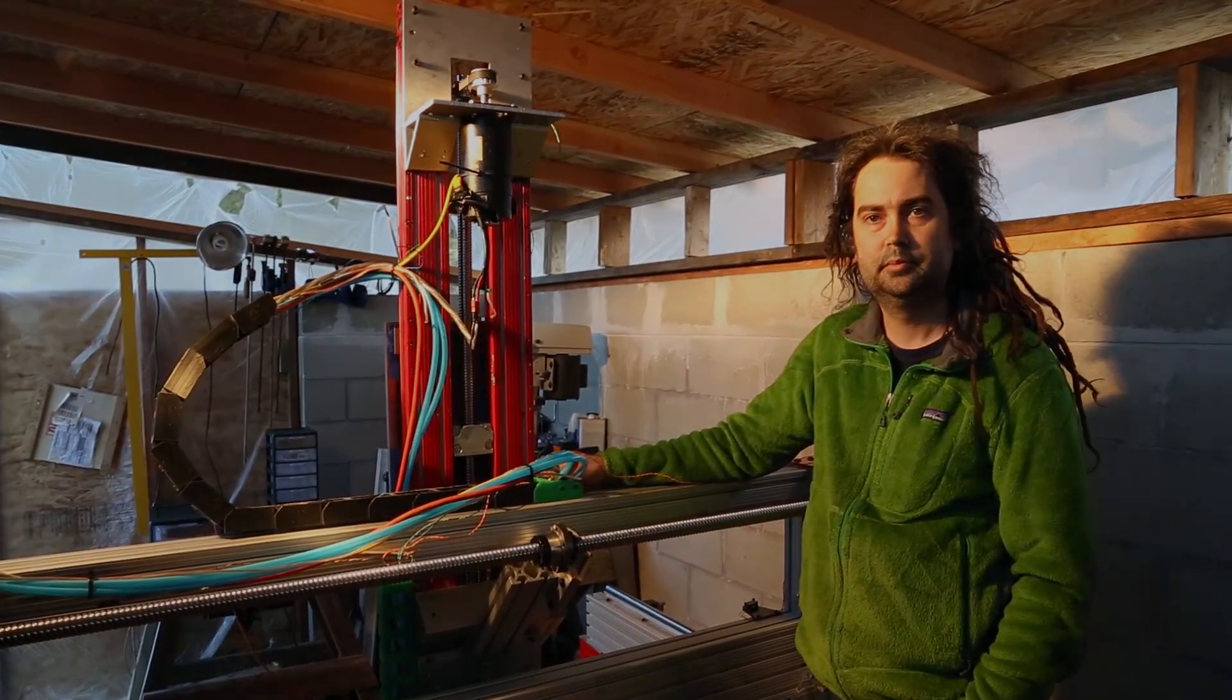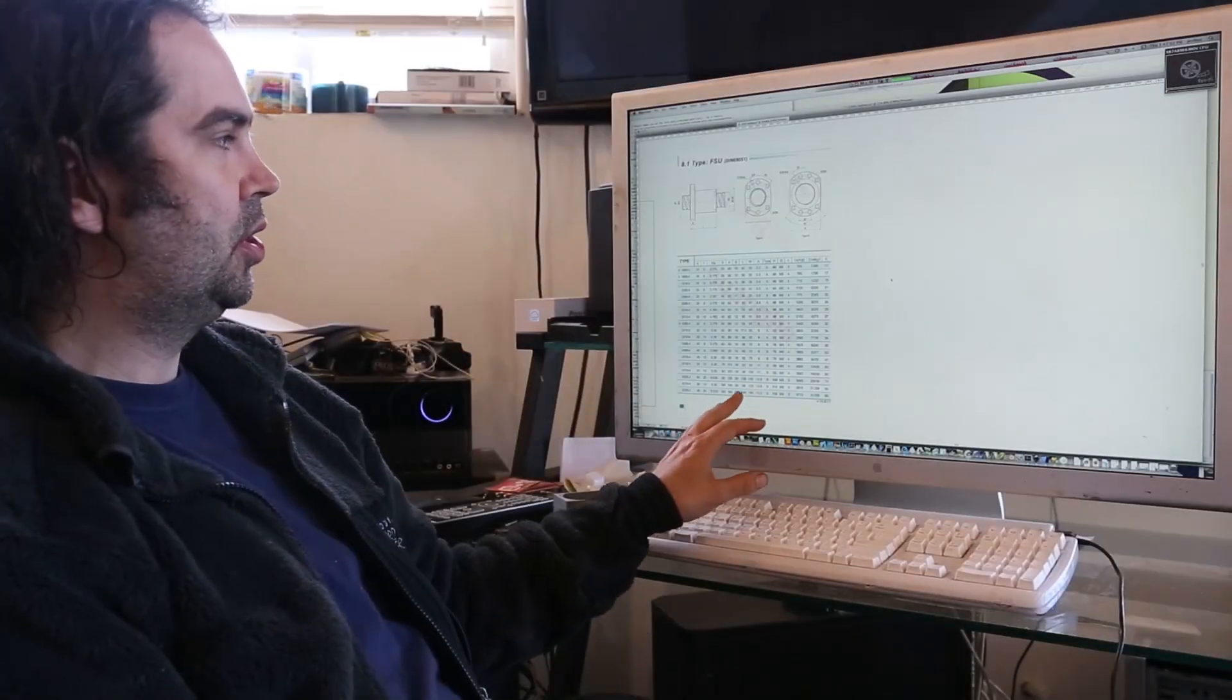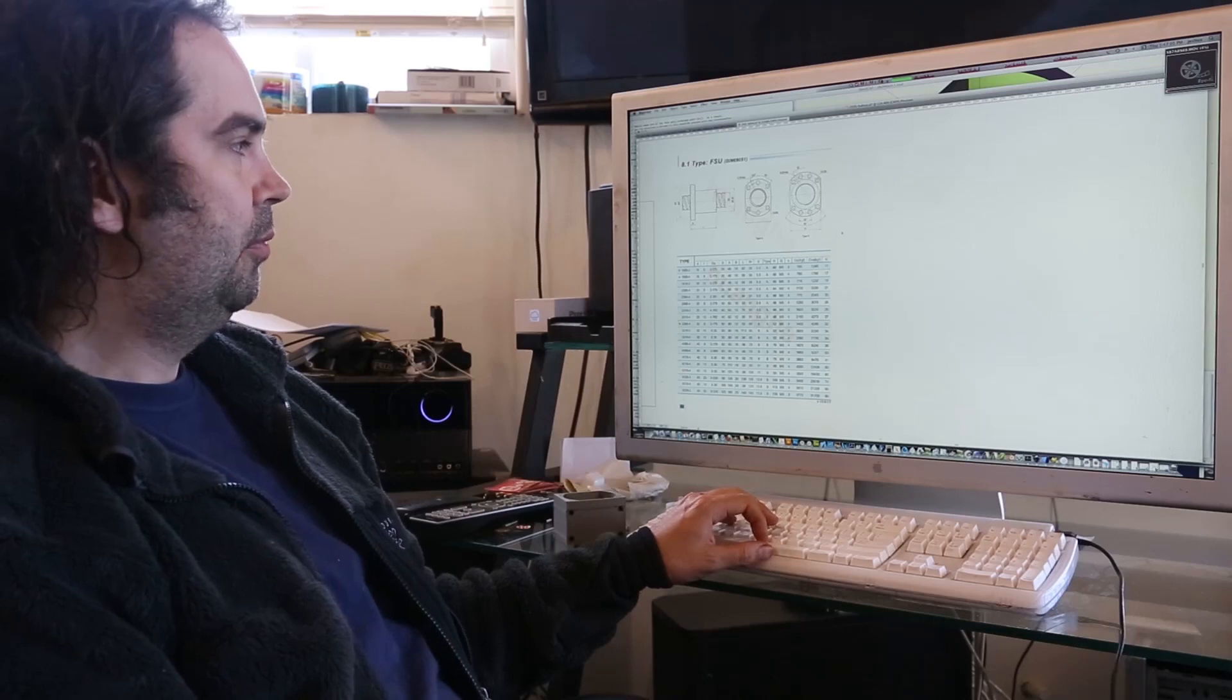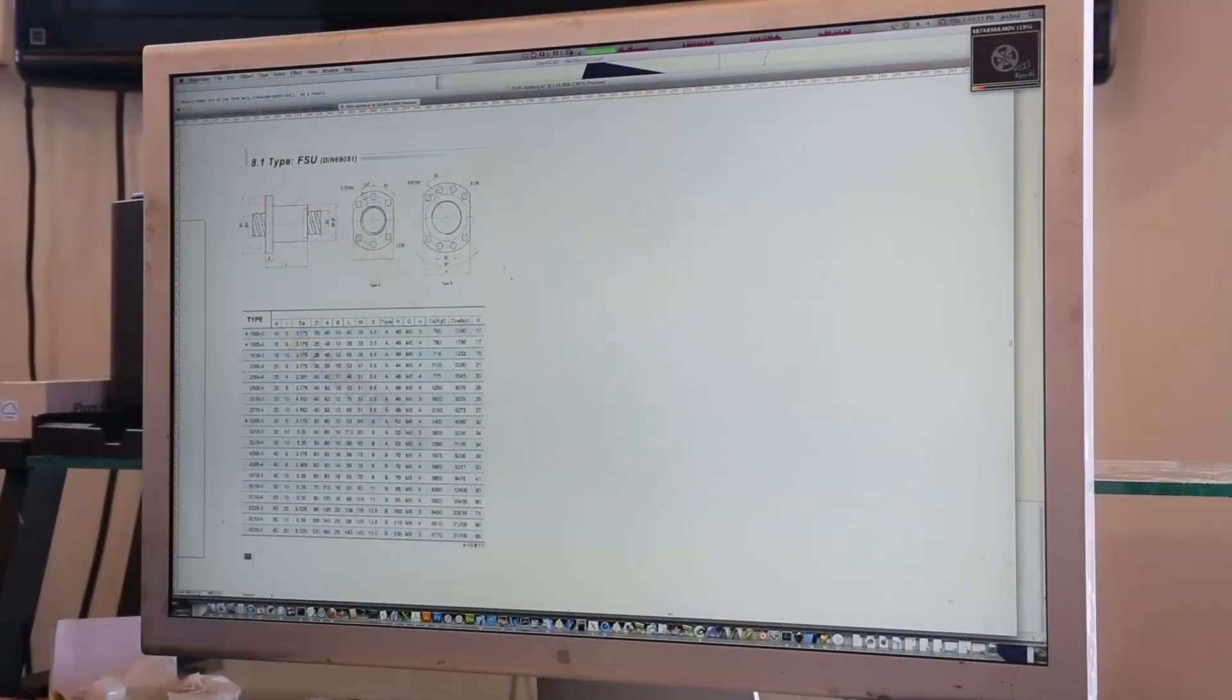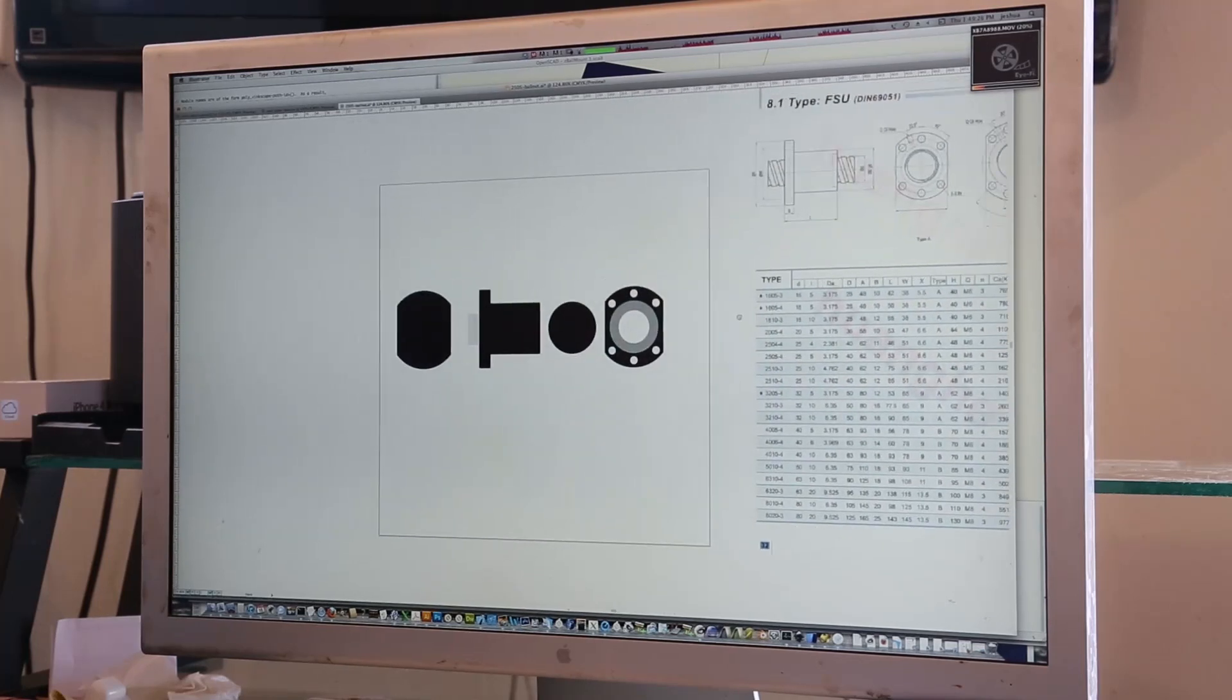So the first thing I did was download the dimensional drawings for the ball screw that we're making a part for. Based on this, we had to look up the dimensions and lay out a drawing, which I did here in Adobe Illustrator.